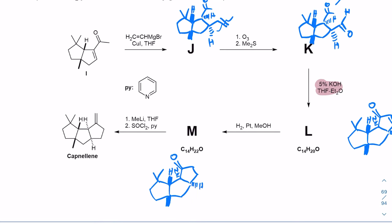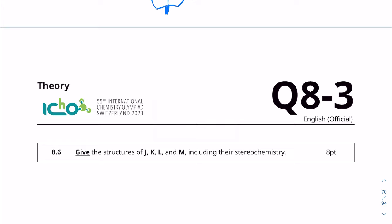Now let's double check that this works. So methyl lithium is going to add in over there, and then SOCL2 with pyridine is just going to eliminate the water. So yes, that would work. I guess we forgot to read the question, but 8.6. Give the structures of J, K, L, and M, including their stereochemistry. We already did. These are the correct structures. So that's the question.